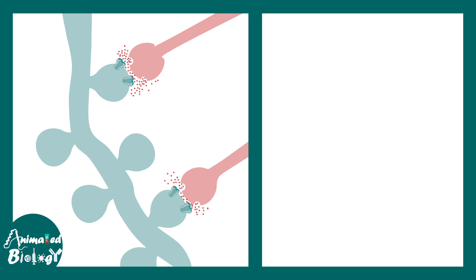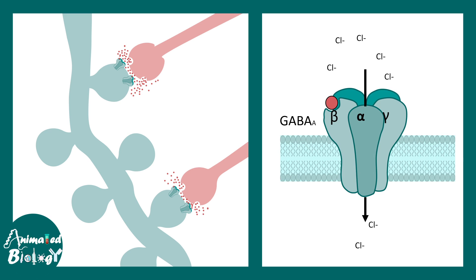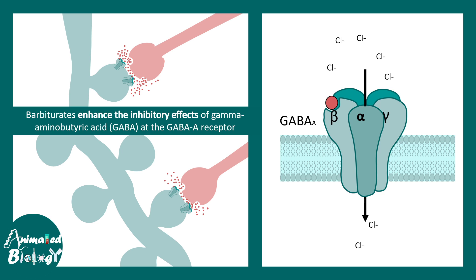Barbiturates basically act on the GABAergic synapses and alter the modularity in those synapses. If we zoom into a post-synapse of a GABAergic synapse, we can see the GABA-A type receptors, which bind to GABA and allow chloride ions to get in. Barbiturates enhance the inhibitory effect of GABAergic synapses.